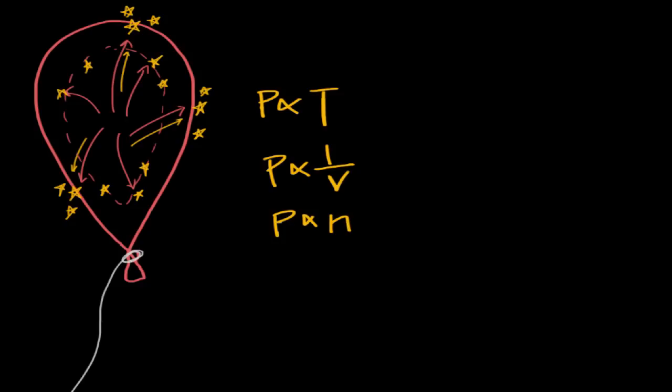Now based on these empirical observations, which means observations that we can actually see as opposed to just theory, we have the composite formula. If we put them together, we see that pressure is directly related to the moles and the temperature and inversely related to volume. And so we have this composite formula, P is directly related to nT over V.